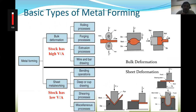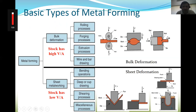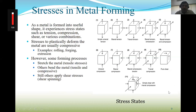There are different metal forming processes. Bulk forming includes rolling, forging, extrusion, and wire drawing. Sheet metal forming includes bending, deep cup drawing, shearing, and miscellaneous processes. All these different mechanical processes undergo different kinds of state of stress, and this is the most important thing in metal forming.